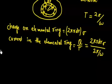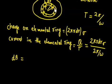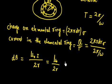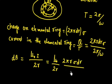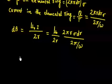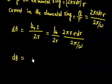Now we calculate magnetic induction at the center due to this ring. The magnetic induction due to a circular loop is μ₀I/2R. So dB = μ₀·dI / (2r). Plugging in the value of dI, which is 2π·r·σ·dr divided by (2π/ω), we get dB = μ₀·ω·σ·dr / 2 — where the 2π cancels and r also cancels.